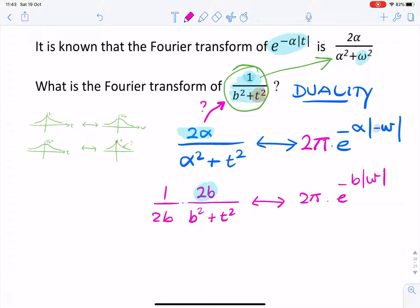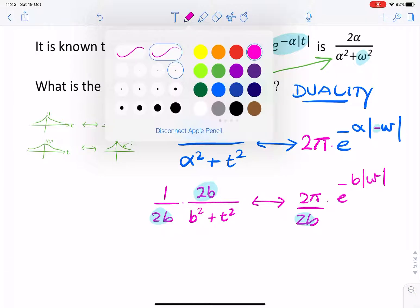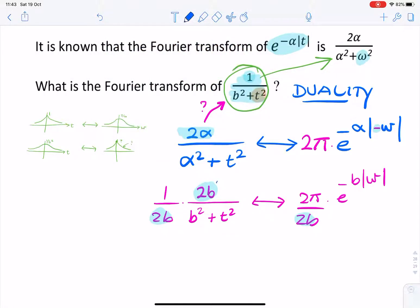And if you do that in the time domain, you need to do the same thing in the frequency domain. So I divide it by 2b. So my final result, that cancels with that, that cancels with that. So you'll have 1 over b² plus t².